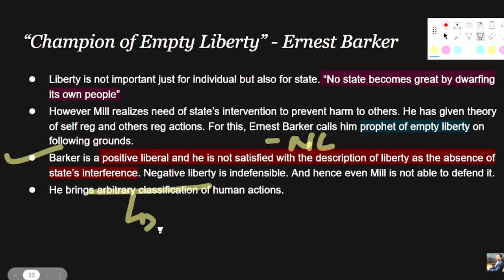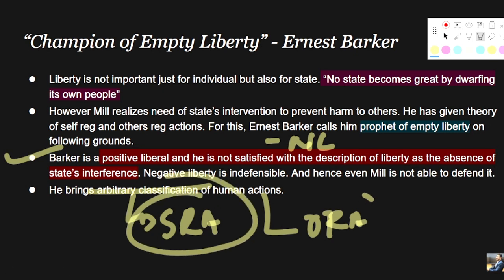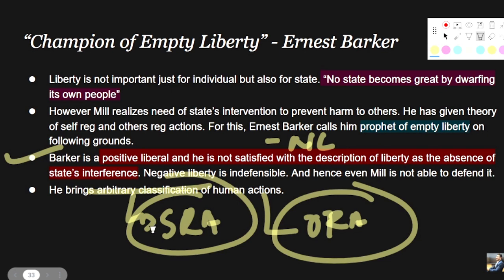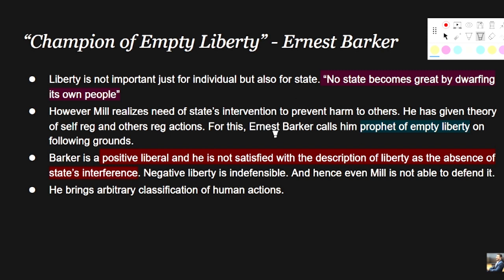The second ground is that Mill brings an arbitrary classification of human action. The classification was self-regarding action and other-regarding action. Barker argues: how can we classify human action into self-regarding or other-regarding? Even some self-regarding actions, like the clothes we wear or how we dress, will have some kind of influence or impact in the society. People will get influenced by the kind of dress we wear — this is human psychology. On this basis, Barker is calling the classification upon which Mill's entire theory of liberty is built as arbitrary.